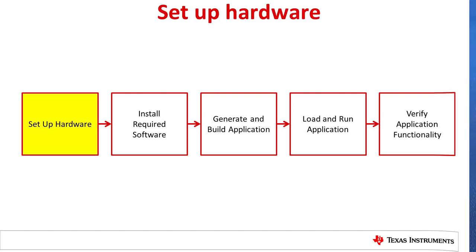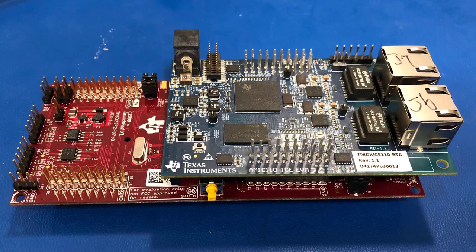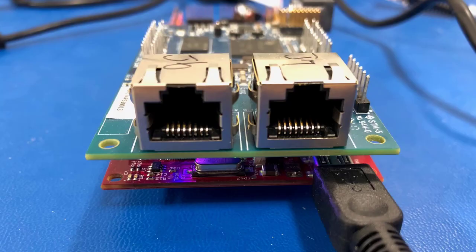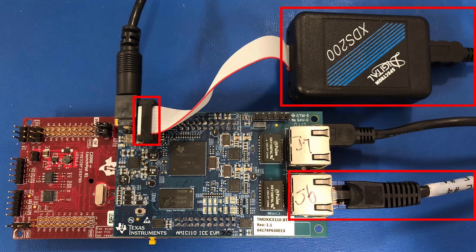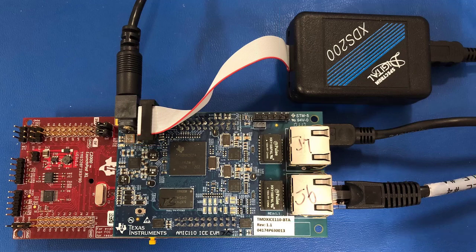Let's begin with the hardware setup. Connect the AMIC 110 ICE on top of the C2000 launchpad via the two 20-pin expansion connectors as shown. Make note of the orientation in the picture to ensure you do not connect the boards incorrectly. Next, connect a mini USB cable from the C2000 launchpad to your PC. Then connect the XDS200 JTAG debug probe to the JTAG connection on the AMIC 110 and connect an Ethernet cable to the J6 port. Connect the other ends of these cables to the host PC. Finally, connect a 5-volt power supply to the AMIC 110.